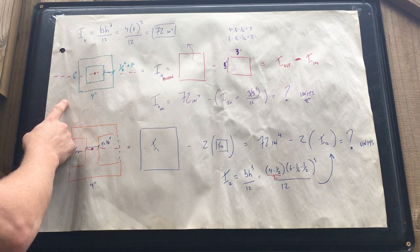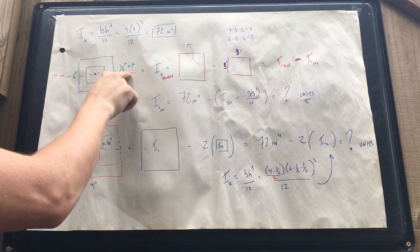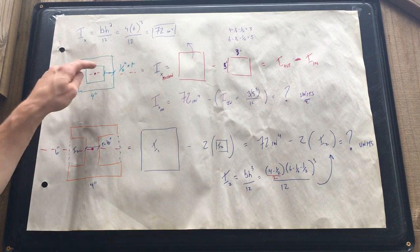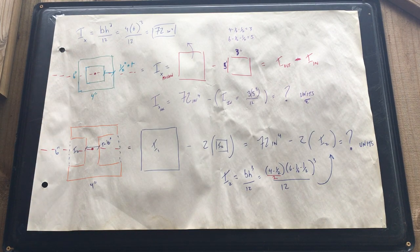So next beam type we're gonna do is hollow. We're gonna keep the same outside dimensions, but now we're gonna have an empty middle. Thickness is gonna be a half, a half all the way around. I'm not changing it on you, so keep that in mind.